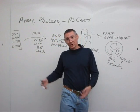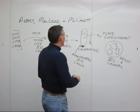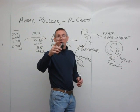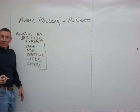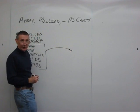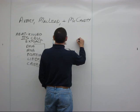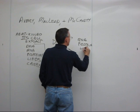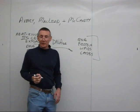Of course, this result would also support the hypothesis that lipids or anything else that remained in the mixture was the genetic material. So they needed another experiment. They took the heat-killed 3S cell extract and treated it with an enzyme that would get rid of the DNA — a DNase — an enzyme that hydrolyzes DNA. What remains after this treatment is RNA, proteins, lipids, and carbohydrates.